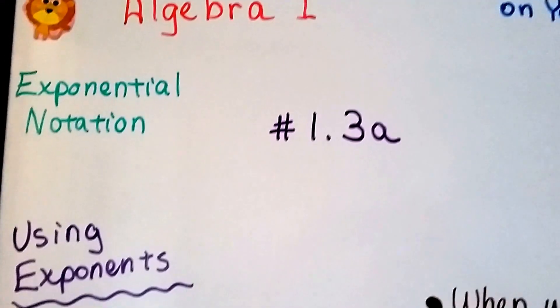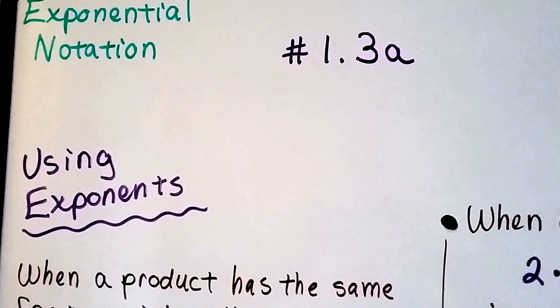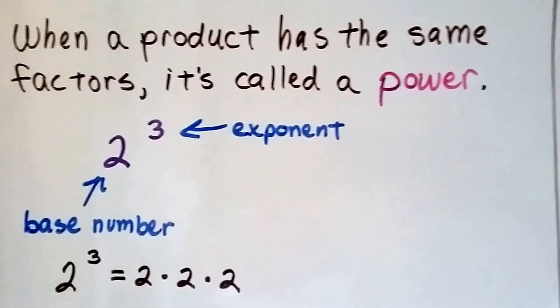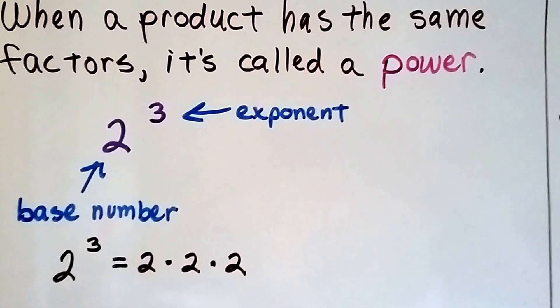Algebra 1 number 1.3a. We're talking about using exponents and exponential notation in this video. When a product has the same factors, it's called a power.